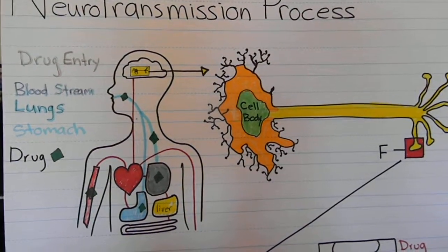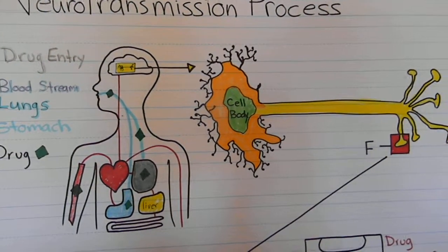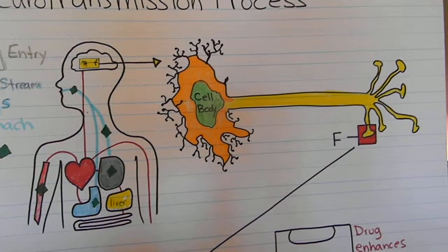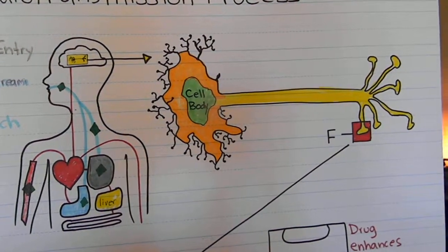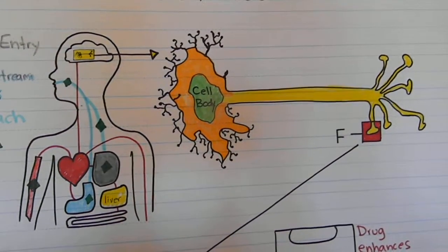Once there, they travel through the circulatory system and into the brain. They're transmitted by being received through dendrites and being released through axon terminals.